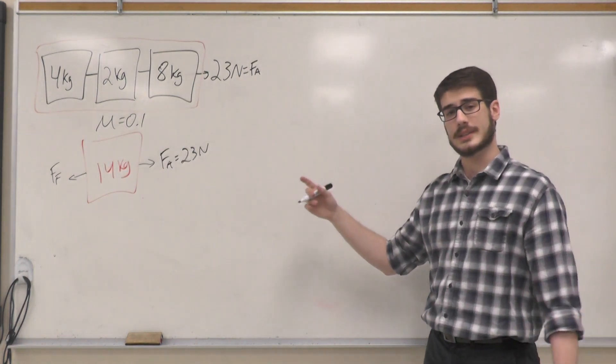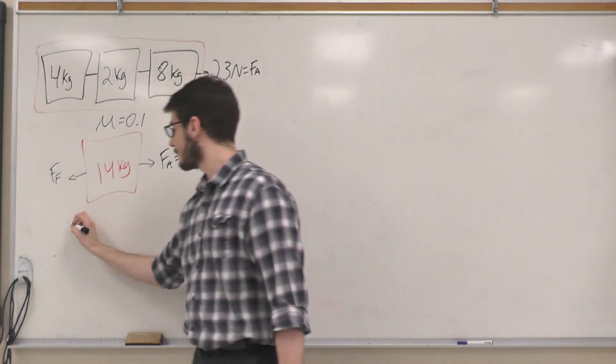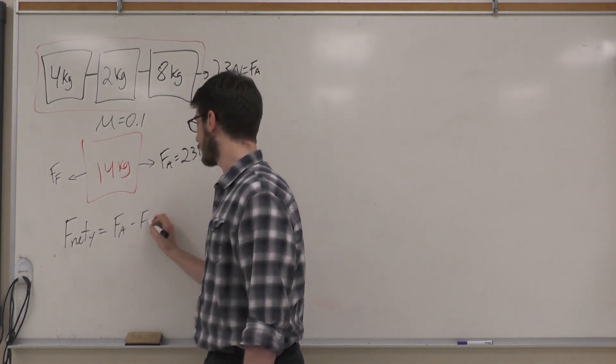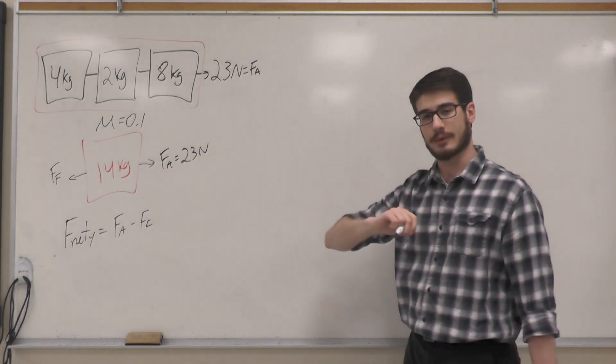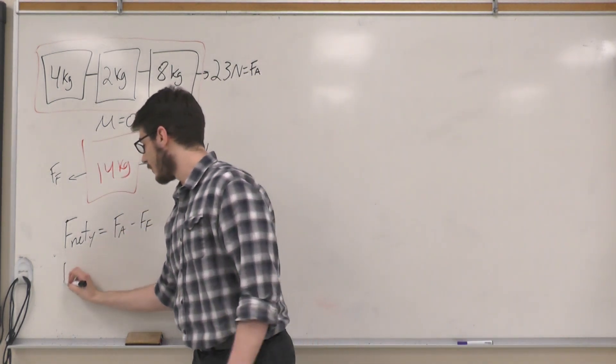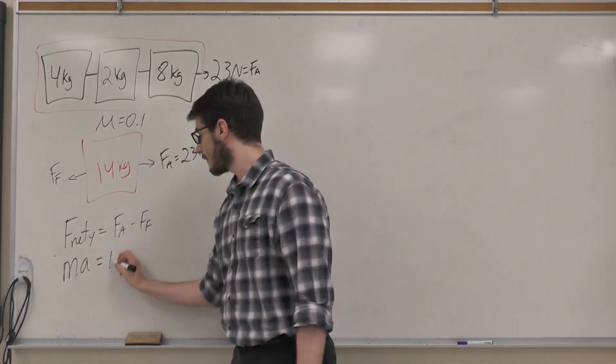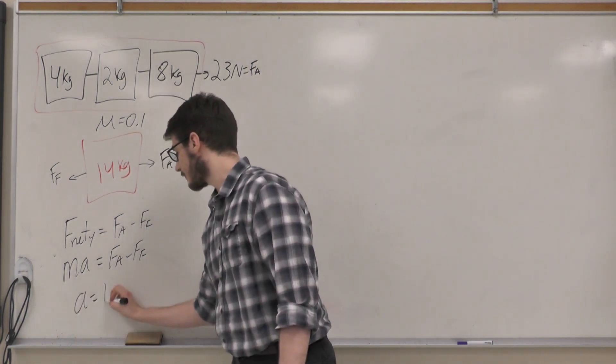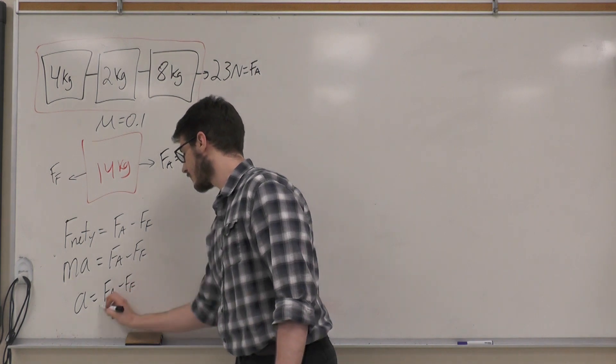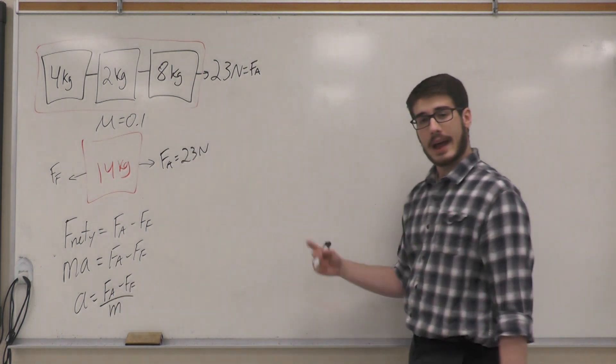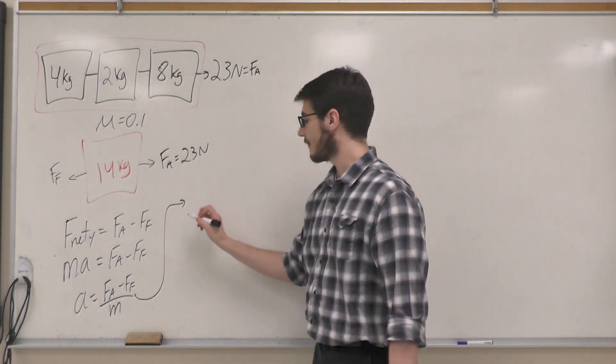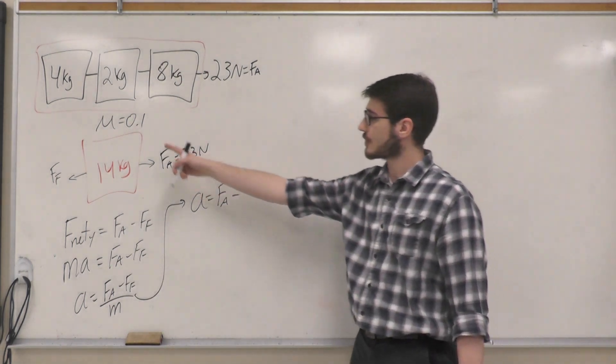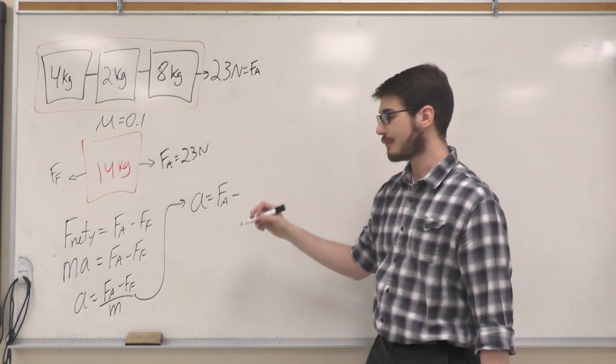That is my coefficient of friction. I want to find the acceleration of the system, so I'm going to look at the F net in the y direction, where the forces present are the force applied and force of friction. I know that F is always equal to ma. I can isolate and solve for a.